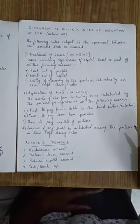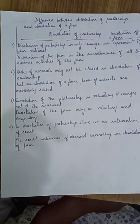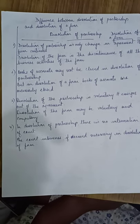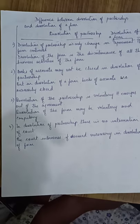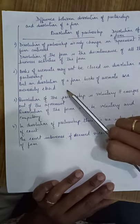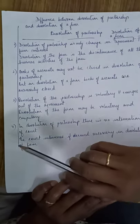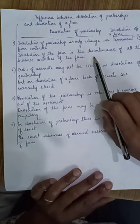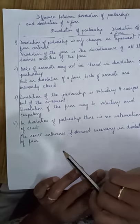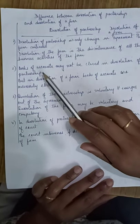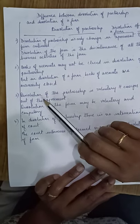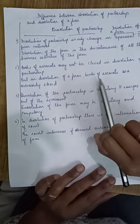We finish the theory portion of dissolution and move to the next topic — the difference between dissolution of partnership and dissolution of partnership firm. Dissolution of partnership is only a change in the agreement between the partners; the firm continues. Dissolution of a partnership firm is the discontinuance of all business activities of the firm including the relationship between the partners. In dissolution of partnership, books of accounts may not be closed; in dissolution of a firm, books of accounts are necessarily closed.